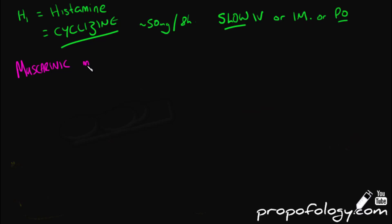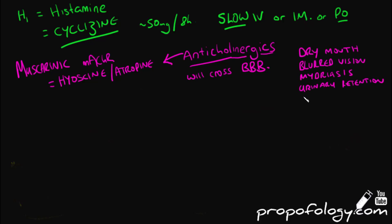At the H1 receptor, which is a histamine receptor, we have cyclizine as our main contender here, 50mg every 8 hours. You can give it as a slow IV, IM or orally. For muscarinic receptors, the top contenders are hyoscine and atropine, although atropine is not used as an antiemetic. They're anticholinergic drugs and will cross the blood-brain barrier. This will give us typical anticholinergic side effects of dry mouth, blurred vision, mydriasis, urinary retention, tachycardia, and sedation.